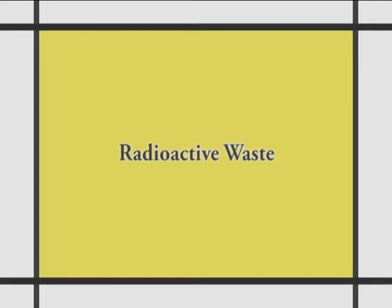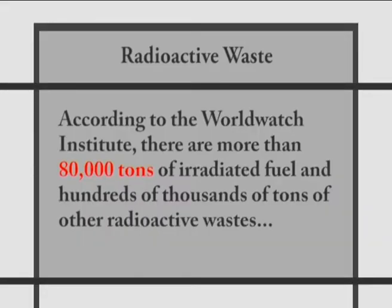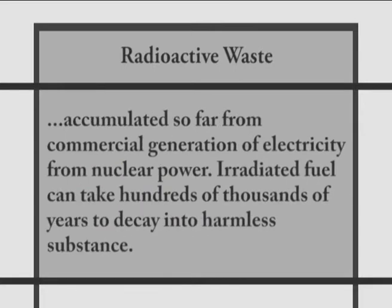Looking at radioactive waste: These mainly arise from nuclear power plants, nuclear testing labs, industrial establishments, etc. According to the World Watch Institute, there are more than 80,000 tons of irradiated fuel and hundreds of thousands of tons of other radioactive wastes accumulated so far from commercial generation of electricity from nuclear power. Irradiated fuel can take hundreds of thousands of years to decay into a harmless substance. Until then, it is extremely dangerous and must be kept far away from possible human contact.